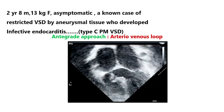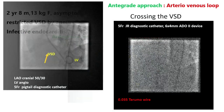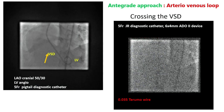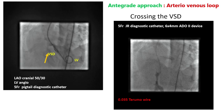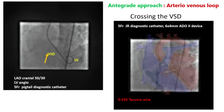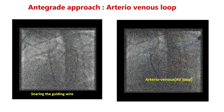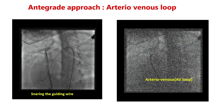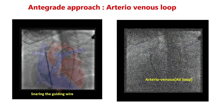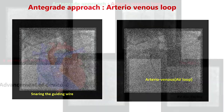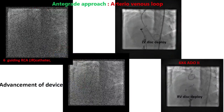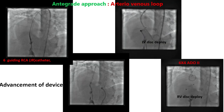Unfortunately, this child developed infective endocarditis. There was very friable tissue around the VSD with a small VSD. This is the VSD morphology. We chose the arteriovenous loop with a snare to make the AV loop, and then used a double disc ADO2 device to close.